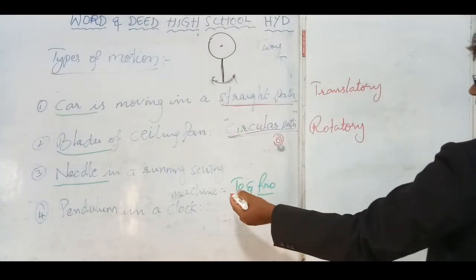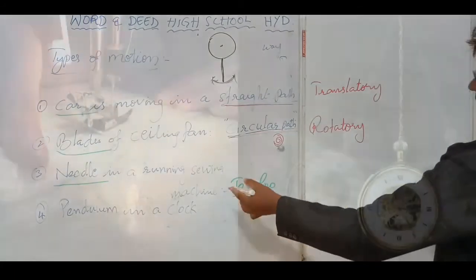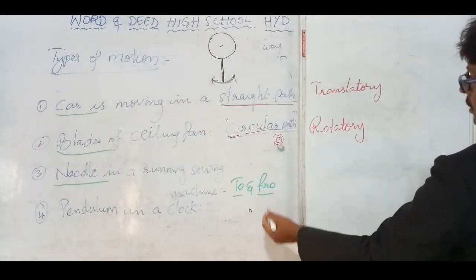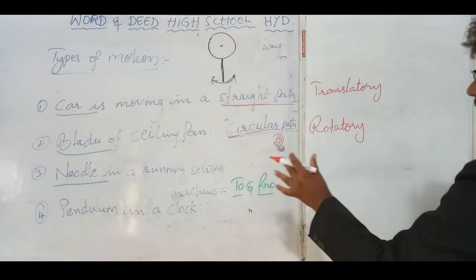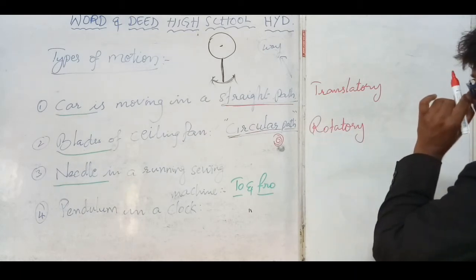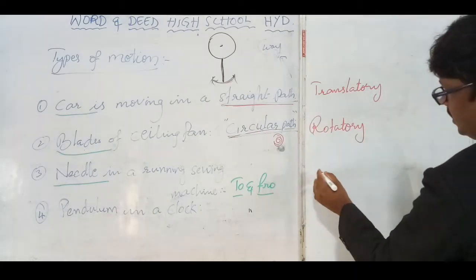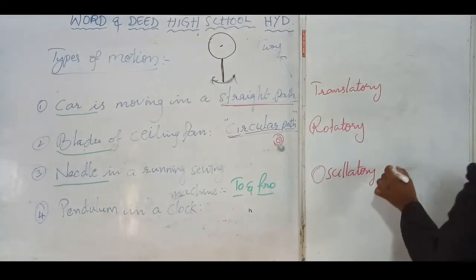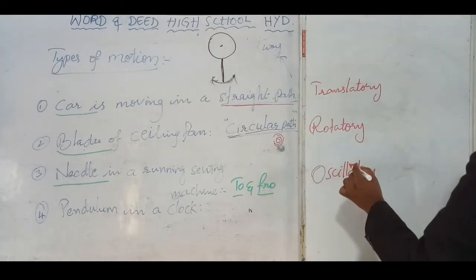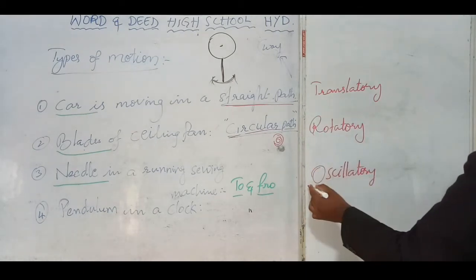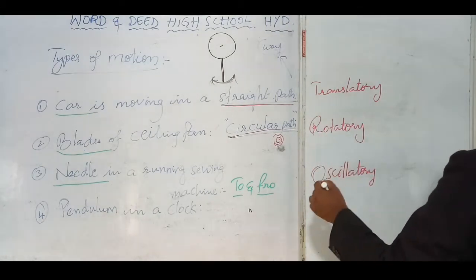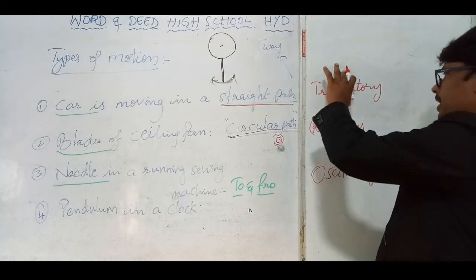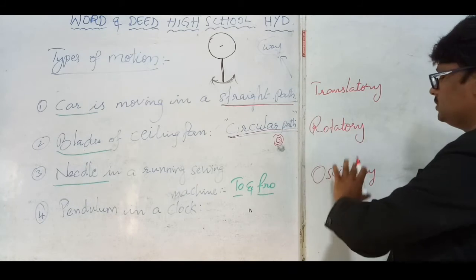The needle in a running sewing machine or the pendulum in a clock moves in a to-and-fro path — it moves between two fixed points. That motion is called oscillatory motion. So the three types are: translatory motion, rotatory motion, and oscillatory motion. What is translatory motion, what are its types, what is rotatory motion, and what is oscillatory motion — we will discuss all of these in detail.